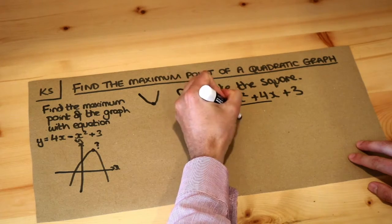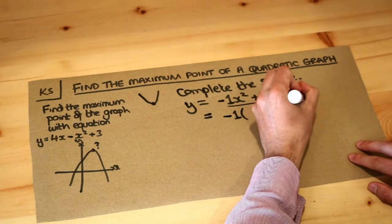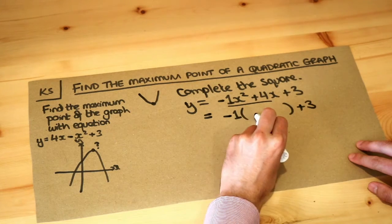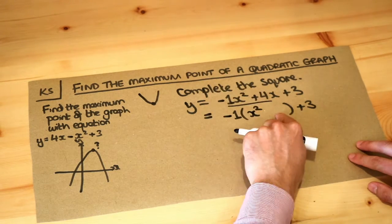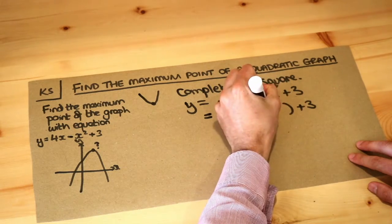If we take the minus 1 out, and we'll just leave the plus 3 at the end, minding its own business. Minus 1 times what is minus 1x squared, which is x squared. And minus 1 times what is plus 4x, which is minus 4x.